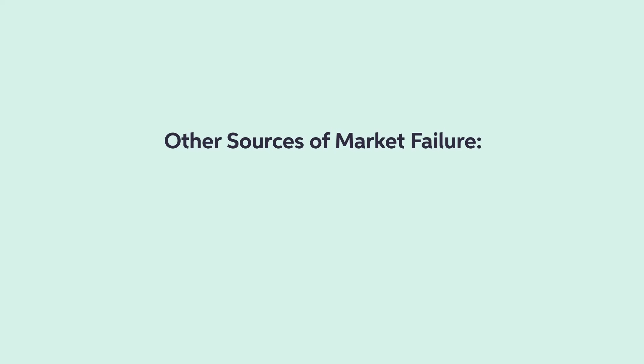Hopefully, our lesson today on the assumptions of markets and the examples of market failure has helped you to better understand how and why markets result in efficient outcomes. While this video discussed externality and market power as examples of market failures, please note that market failures could also arise from other sources, such as public goods and asymmetric information. Come visit us at Chegg for additional help and resources, including connecting with a subject matter expert.